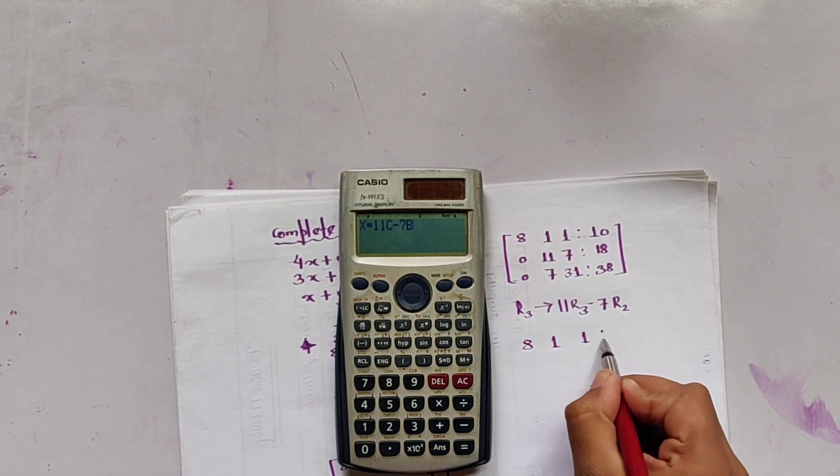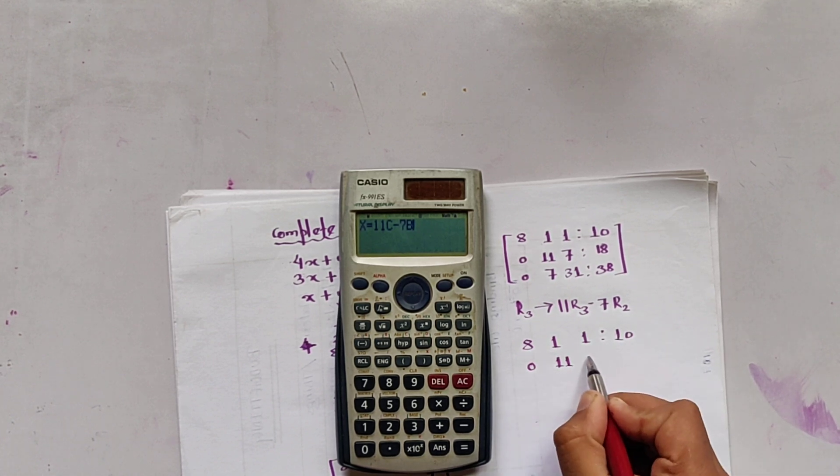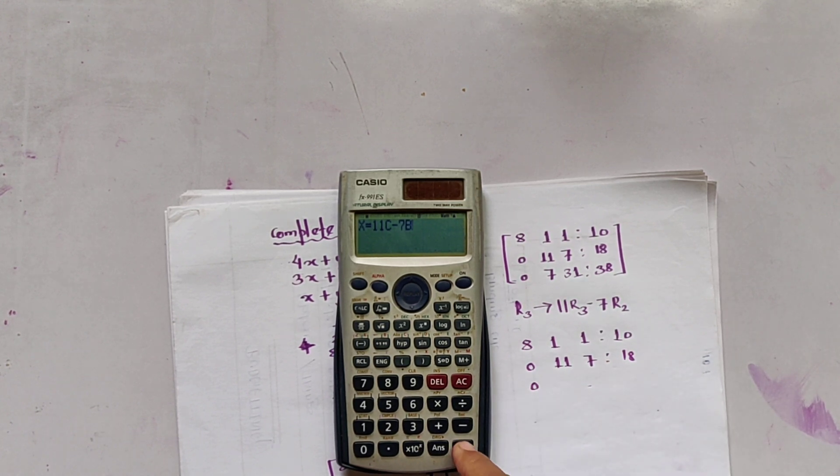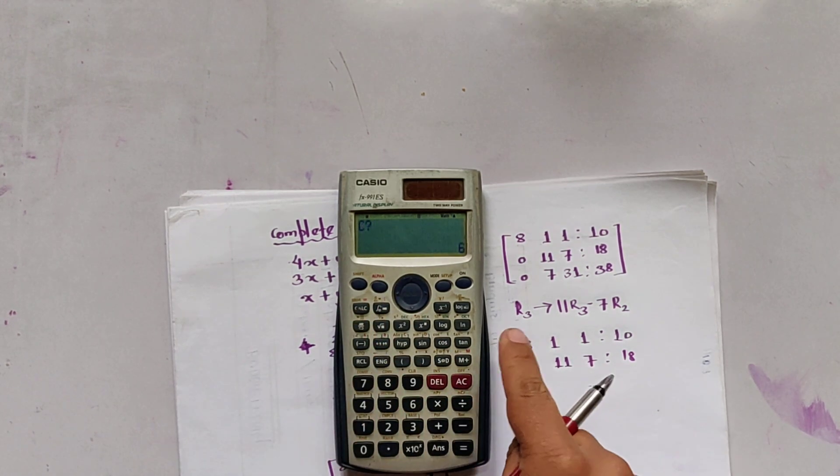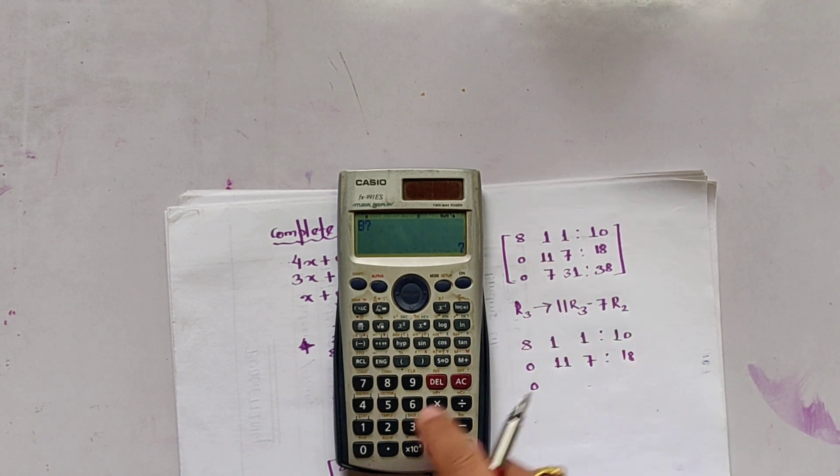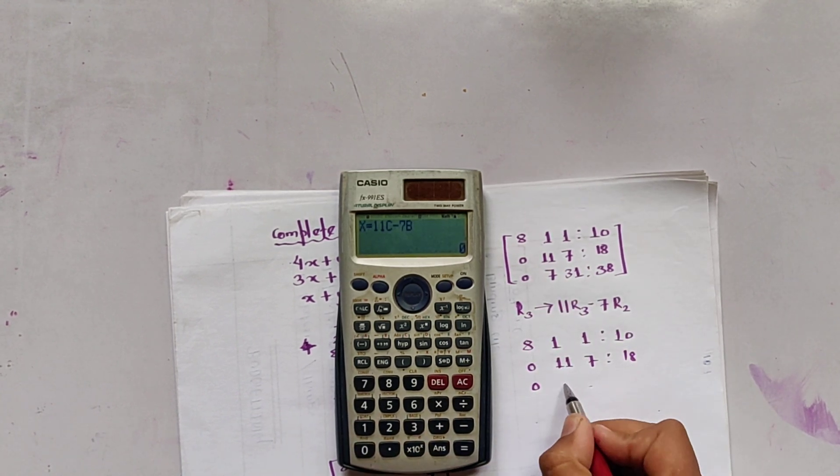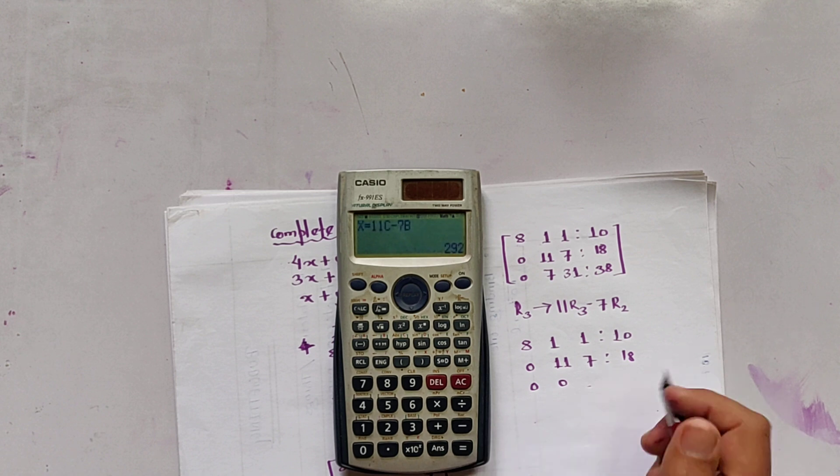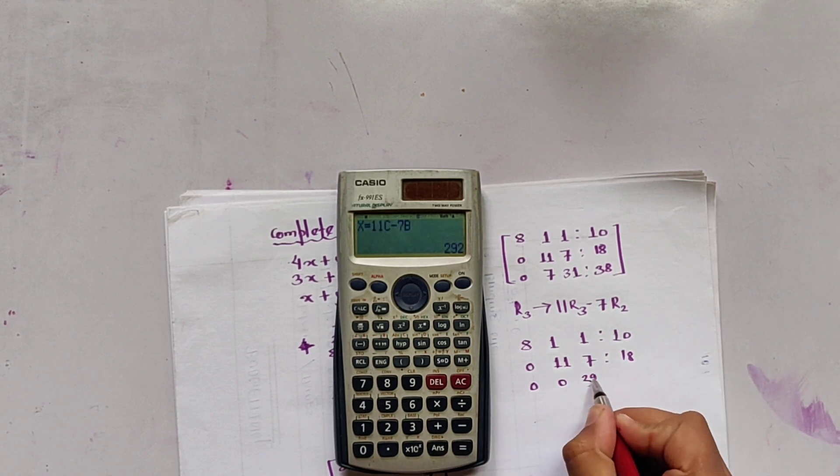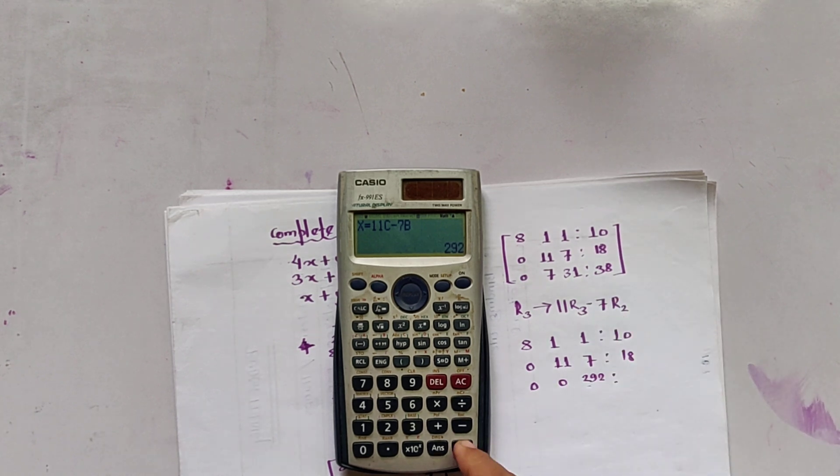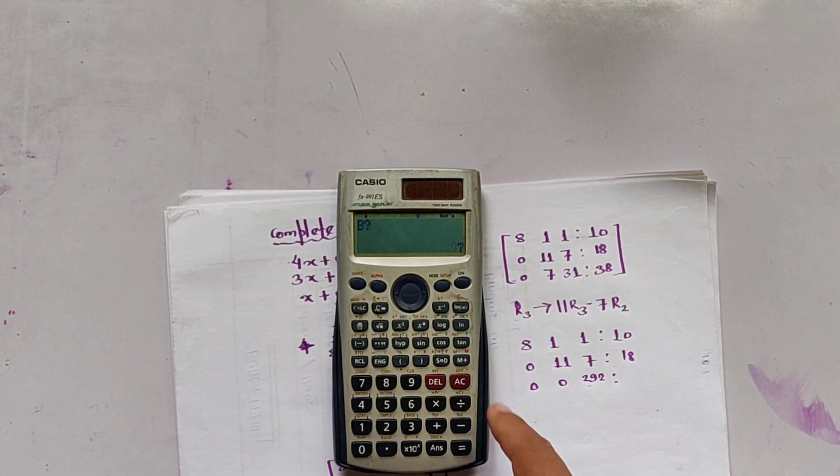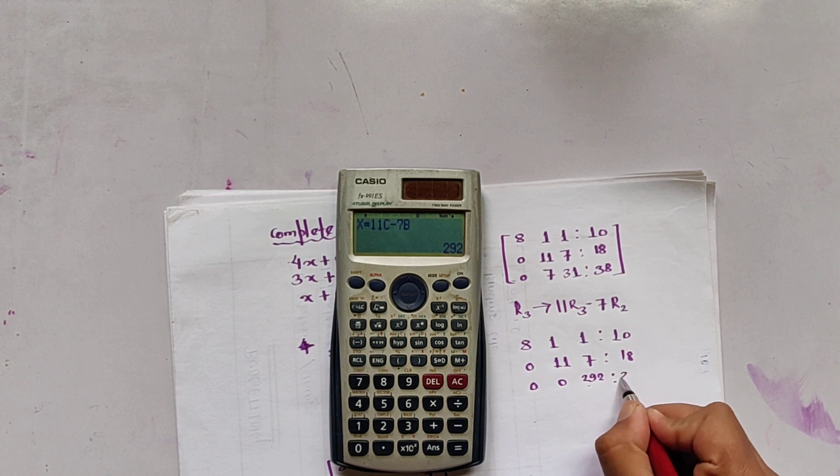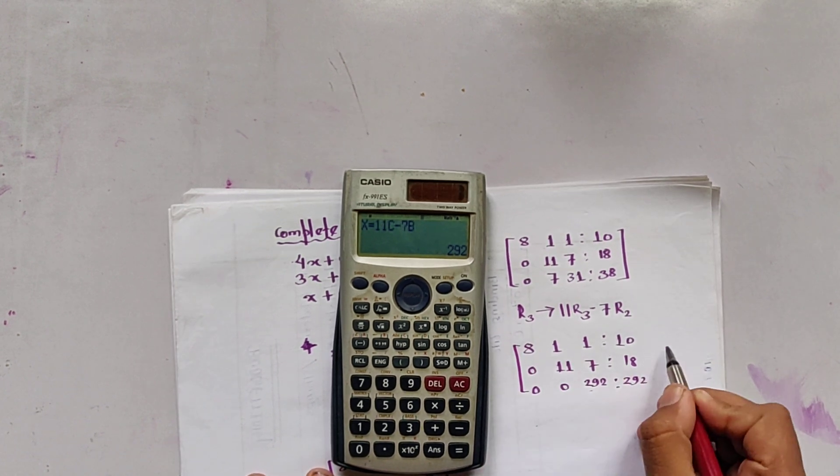So we can write it as X equals 11 times R3 means C minus 7 times B. Let us copy the other matrix: [8, 1, 1, 10], [0, 11, 7, 18]. This is 0. So this must become 0. C is 7 and B is 11. It gives 292. And 38, B is 7, 18. It is 292.